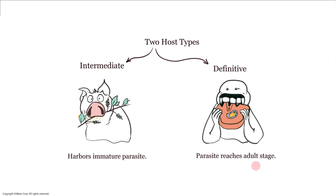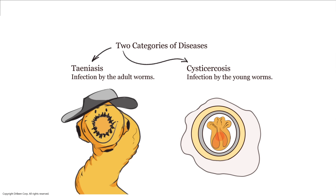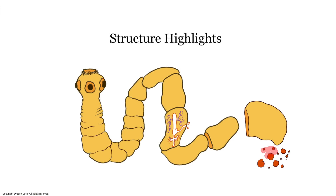The egg, or oncosphere structure, contains the parasite's head and neck at its center — with only six hooks, an immature head, tiny pouches, and multiple surrounding layers. These small red structures visible in diagrams are the oncospheres, including the 50,000 embryonic eggs within a gravid proglottid.